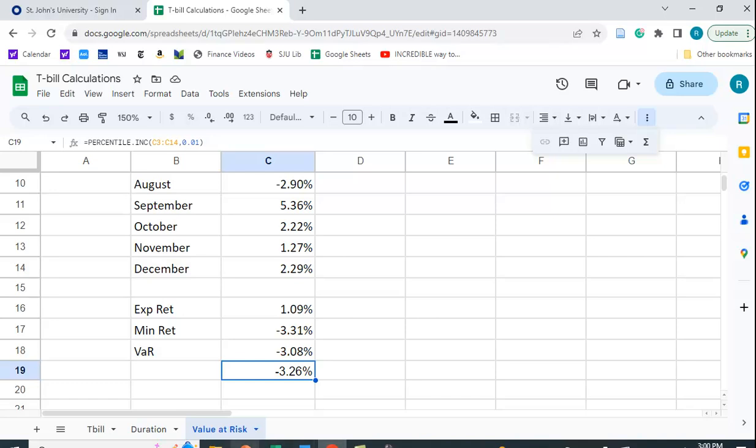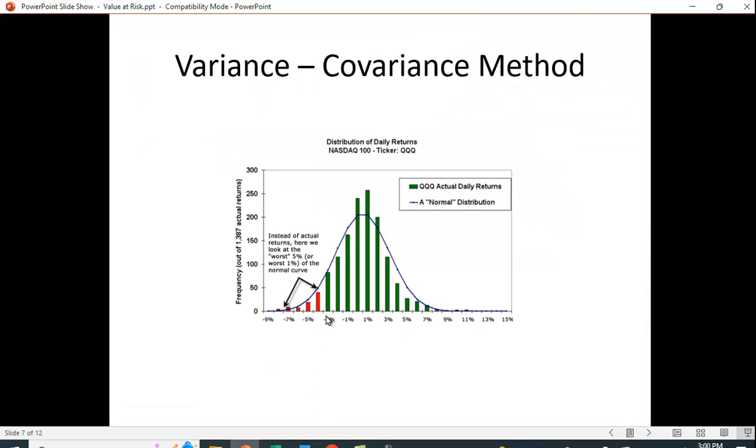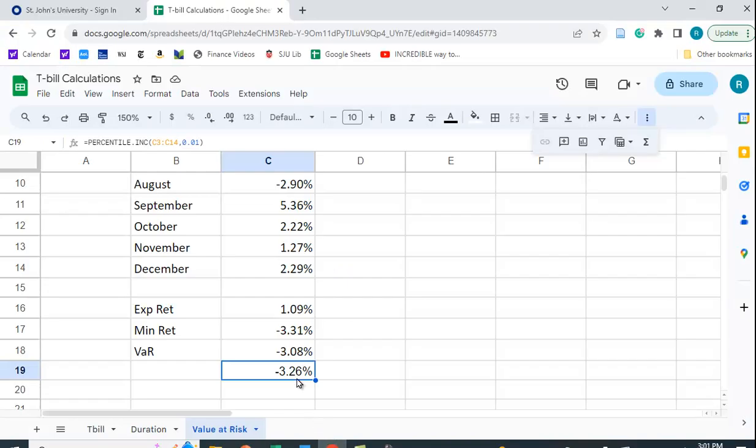If you go back to the slides I had here, what this is finding for us is the values to the left. That means that, for example, 99% lie to the right of the value that we computed using Google Sheets. So we feel quite certain that we're not going to lose more than 3.26% in any month.